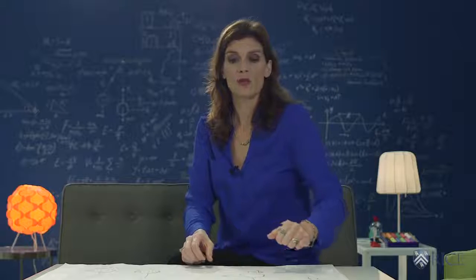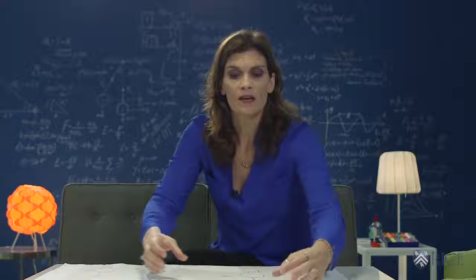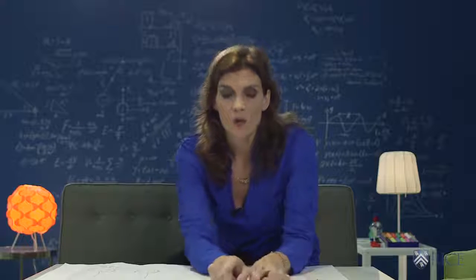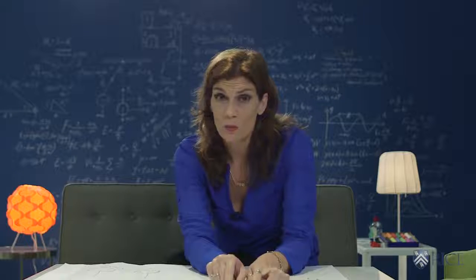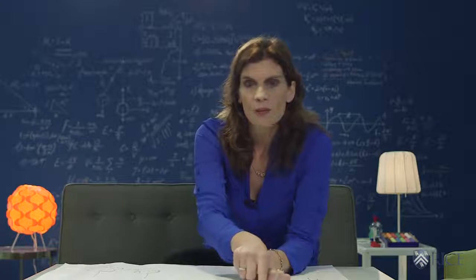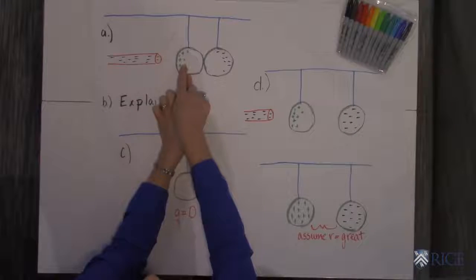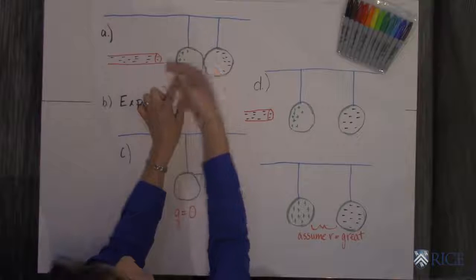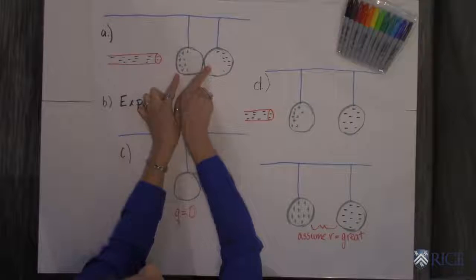Now they're touching, so you've got them coming together, got a charged metal rod. What happens in these spherical conductors is that the positive charges, the holes, are going to attract toward the rod and the negative charges, the electrons, are going to be pushed away.